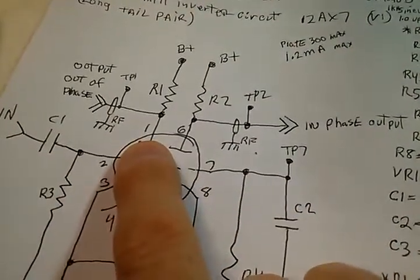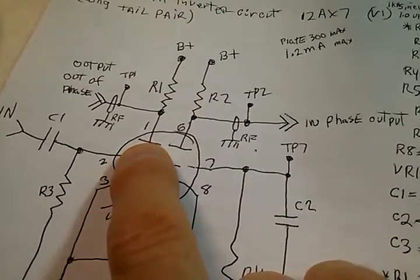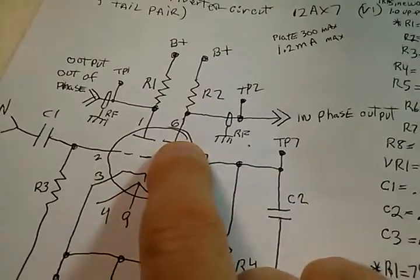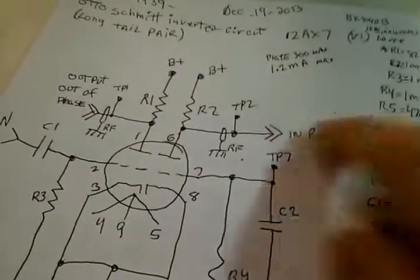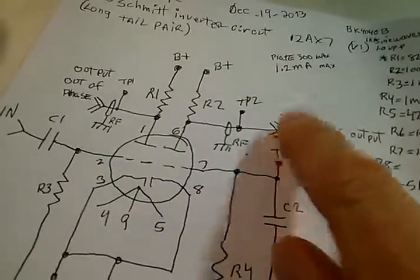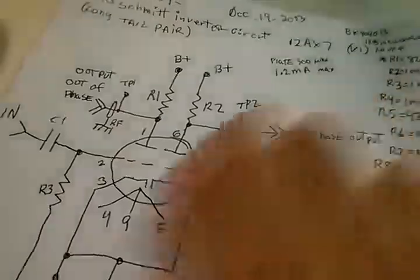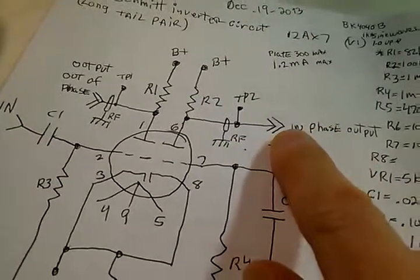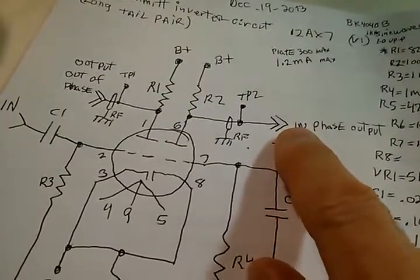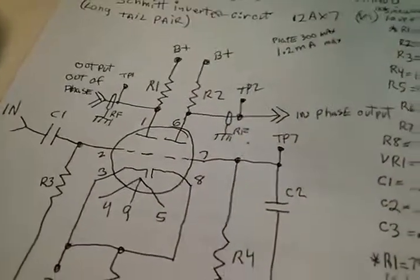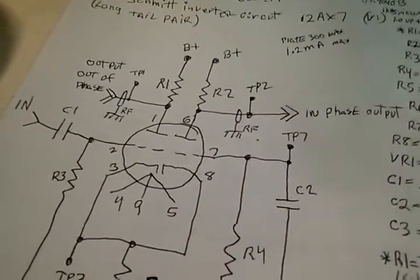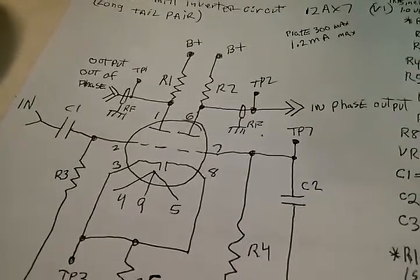Out of phase on the number one cathode plate, and the in phase on the number six plate. Most likely you're gonna be putting a capacitor here to decouple the DC in the next stage, whether it's a driver or go right into the push-pull. So there you have it.